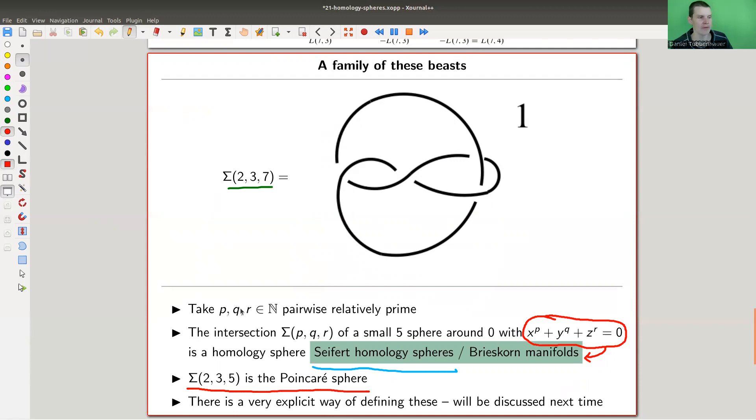So I need to take p, q, and r pairwise relatively prime, so the smallest possible solution is 2, 3, 5, and that's exactly the Poincaré sphere. But for any such choice, you have a homology sphere, and they're determined by those three numbers. So you have really infinitely many of these beasts.